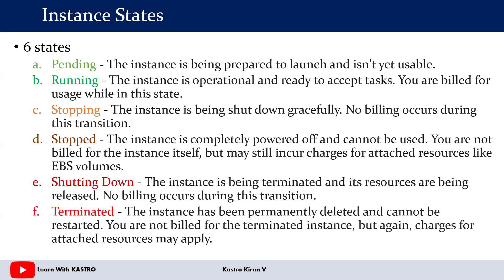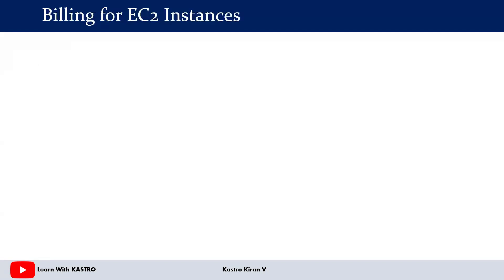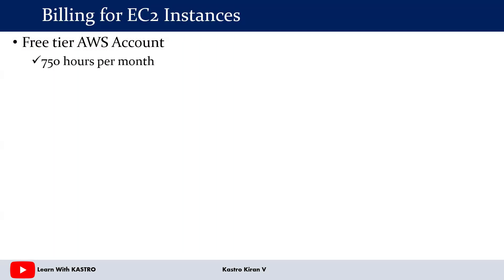So these are the six different states for any EC2 instance: Pending, Running, Stopping, Stopped, Shutting Down, and Terminated. Once terminated, the EC2 instance is permanently deleted from your AWS console. Now let's talk about the billing aspect of the EC2 service. When working with an AWS Free Tier account, for all instances you create in AWS Cloud, you get 750 hours per month.